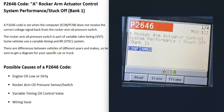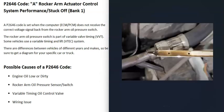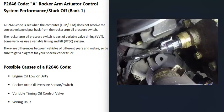The first thing to check for a P2646 code is your engine oil — make sure it's not low or really dirty, because the variable valve timing system works off of oil pressure. If the oil is low or dirty, that's going to cause problems.